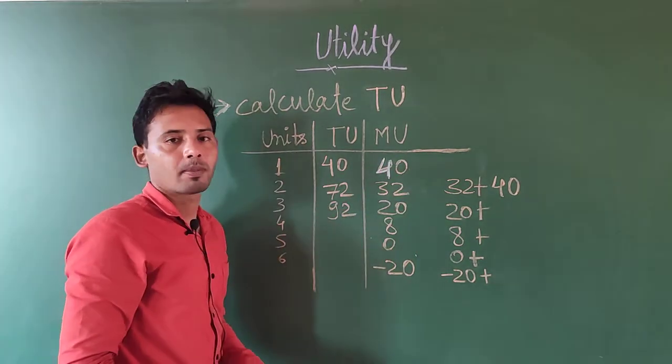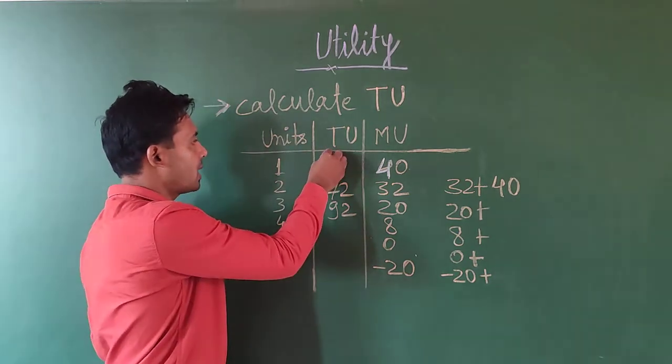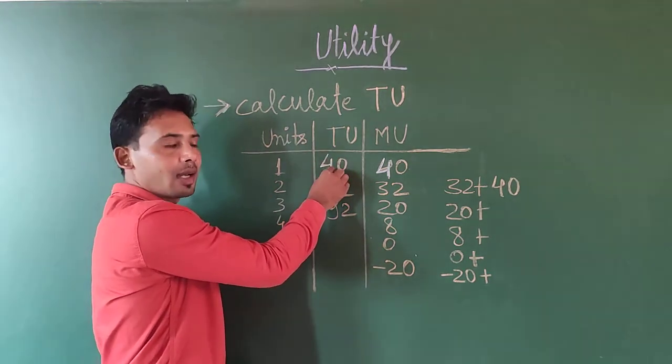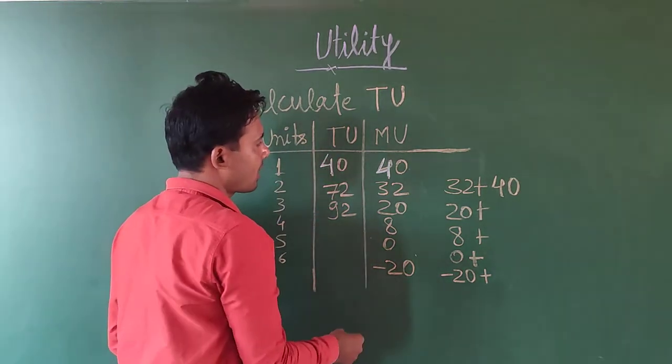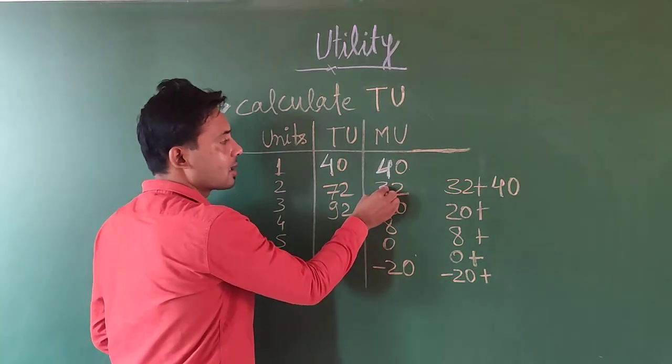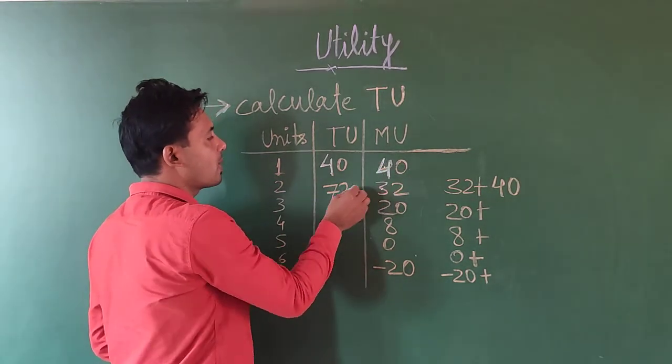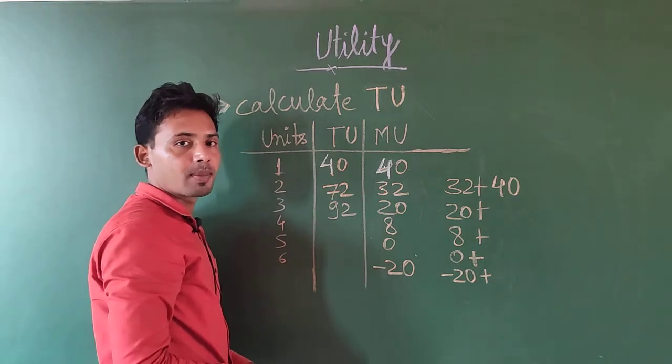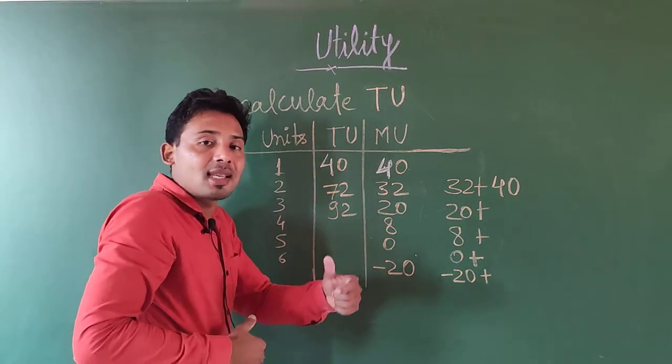Because 40 plus 0 is equal to 40. Next one, how to do the second one?